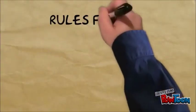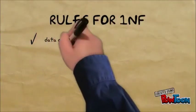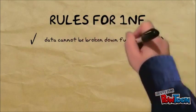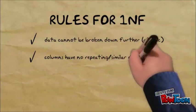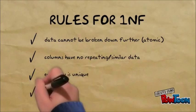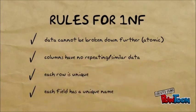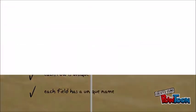For a schema to be in 1NF, it should satisfy the requirement of atomic data. It shouldn't contain columns with repeated or similar data. Duplication of rows is not allowed, and each field should have a unique name among other fields.